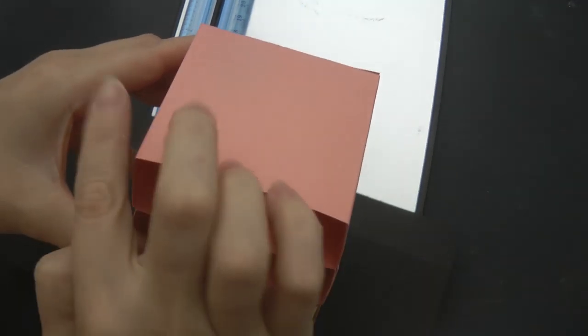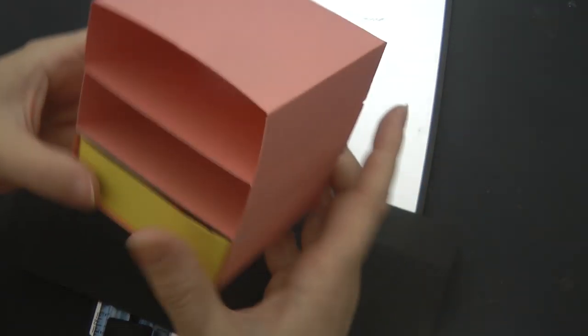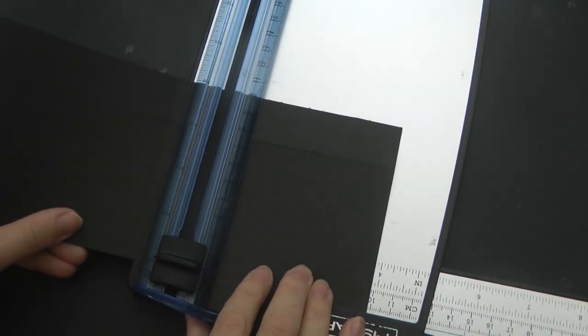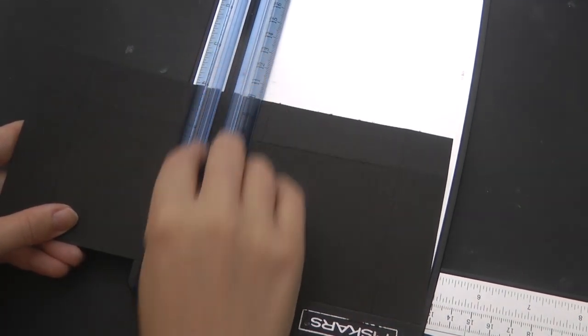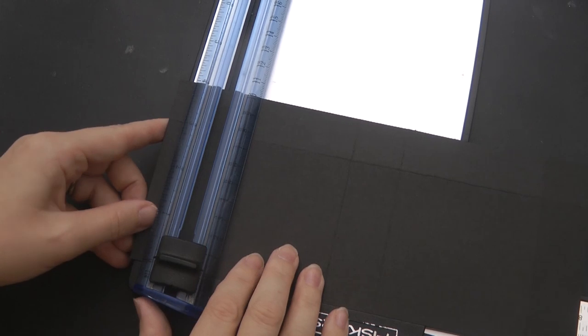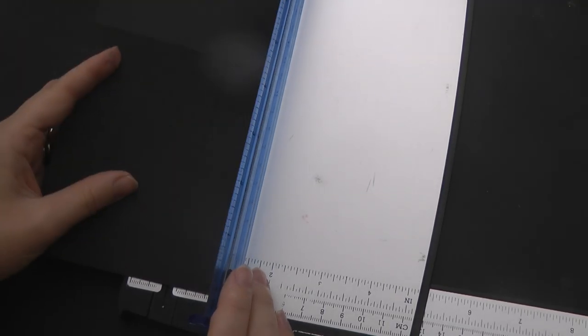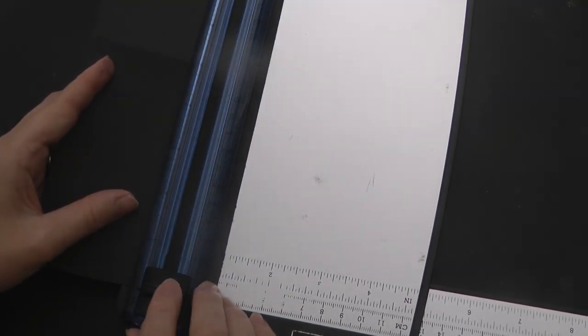For the outside piece which is this piece here, the scoring looks like this. You'll take your 9 inch by 4 inch piece of paper and you're going to score at 1 inch, 4 inches, 5 inches and 8 inches. And then here you're going to go in 1 inch and score the length lengthwise.